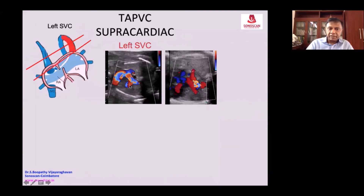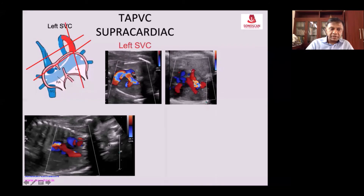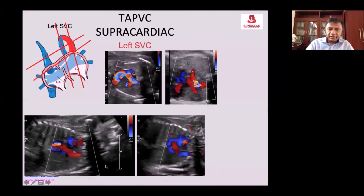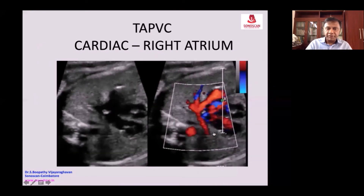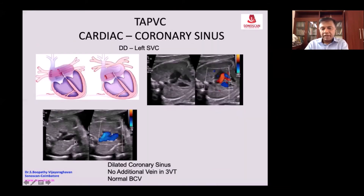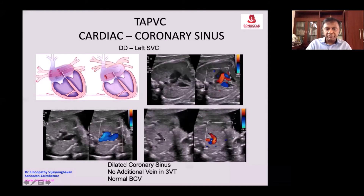From the left SVC it is crossing to join the right atrium. When you do this coronal scan, you see the right SVC in red and the vertical vein on the left side in blue — blue from the right — joining together and opening directly into the right atrium, which is seen well in the video. You can see the additional vein, and when you see the brachiocephalic vein, it is normal.